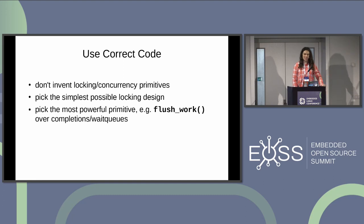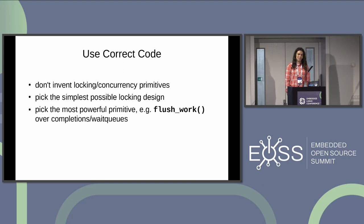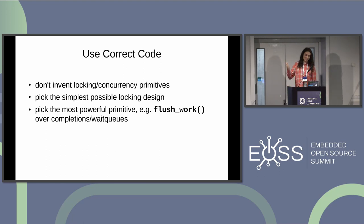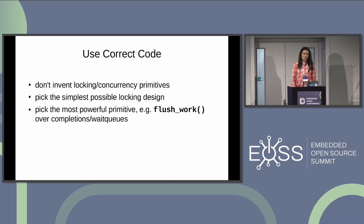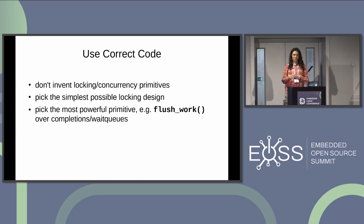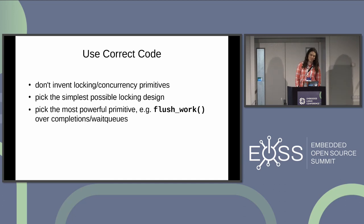Use the existing locks, because a lot of people have thought a lot about exactly what they mean, the precise semantics, what barriers need to be included, the right lockdep annotation, and how the semantics change when you enable real-time Linux. Pick the simplest possible lock or lock design, because generally the rules are stricter and so you catch bugs quicker. If you can use a simple spinlock, that's better than a mutex. A spinlock is better than a read-write mutex if you don't need it, because there's less you're allowed to do and more that lockdep can catch for you.